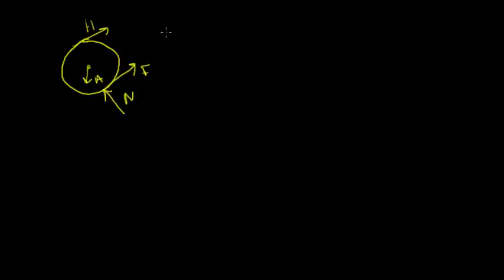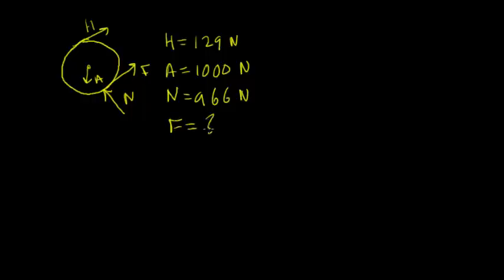And then there's the normal contact force, normal to the ramp, and that's given by N. So, you're given some magnitudes of some of these forces. H is 129 newtons, A is 1,000 newtons, N is given as 966 newtons, and finally we're supposed to find the friction force F.